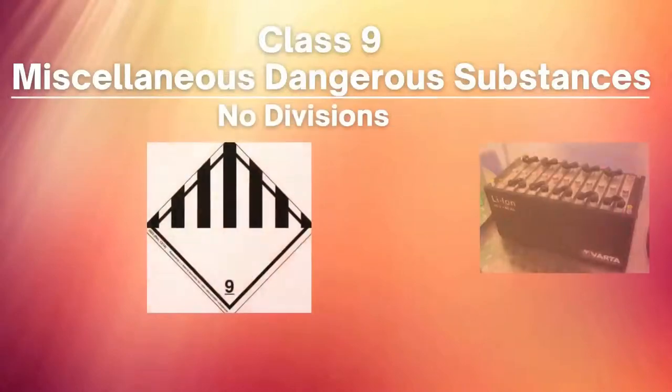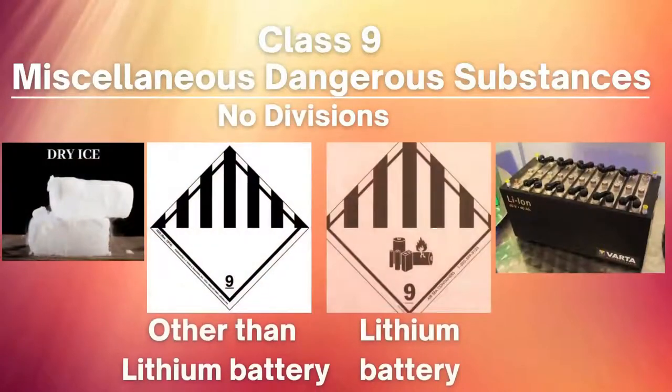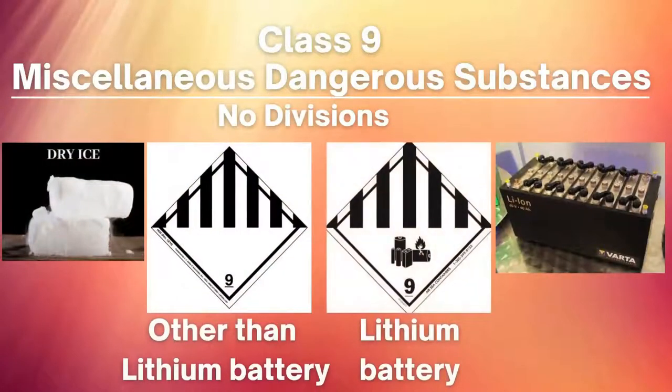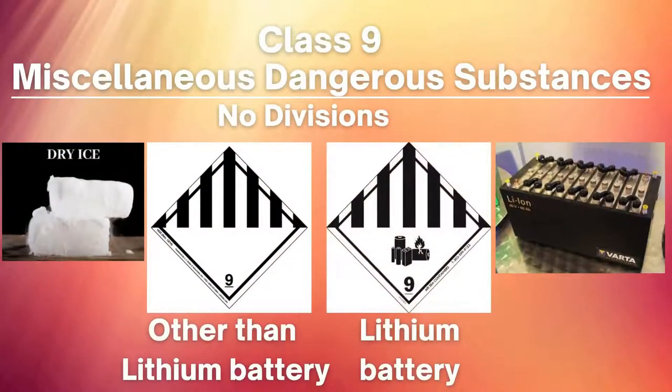The last one is Class 9: Miscellaneous Dangerous Substances. It has no divisions. Easy examples are dry ice, lithium batteries, and magnetized materials.